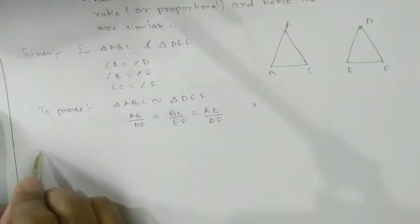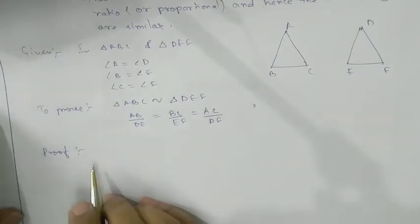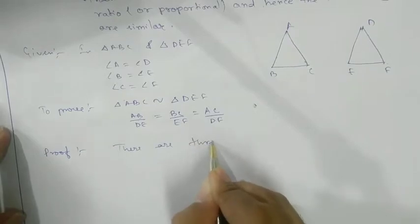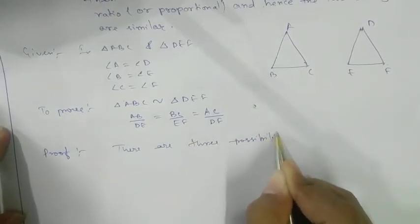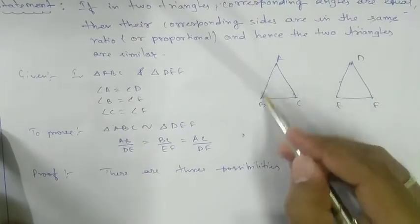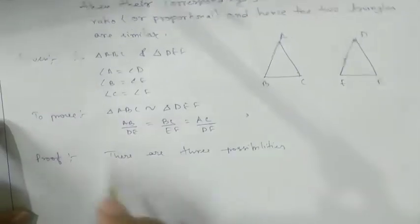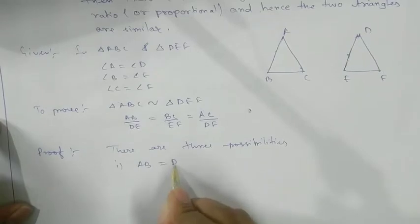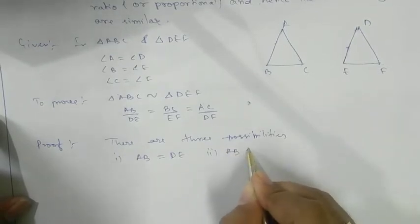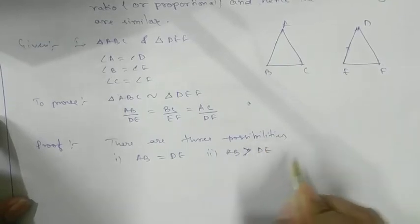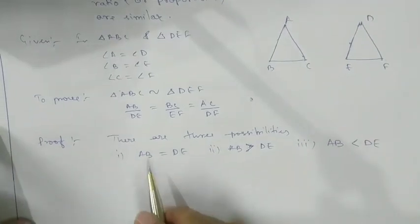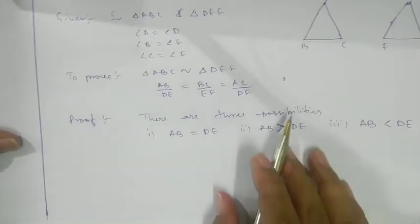To prove this, we have three conditions, meaning three cases are possible. There are three possibilities: Case 1 — AB equals DE; Case 2 — AB is greater than DE; Case 3 — AB is less than DE. We are going to see what happens in each case.